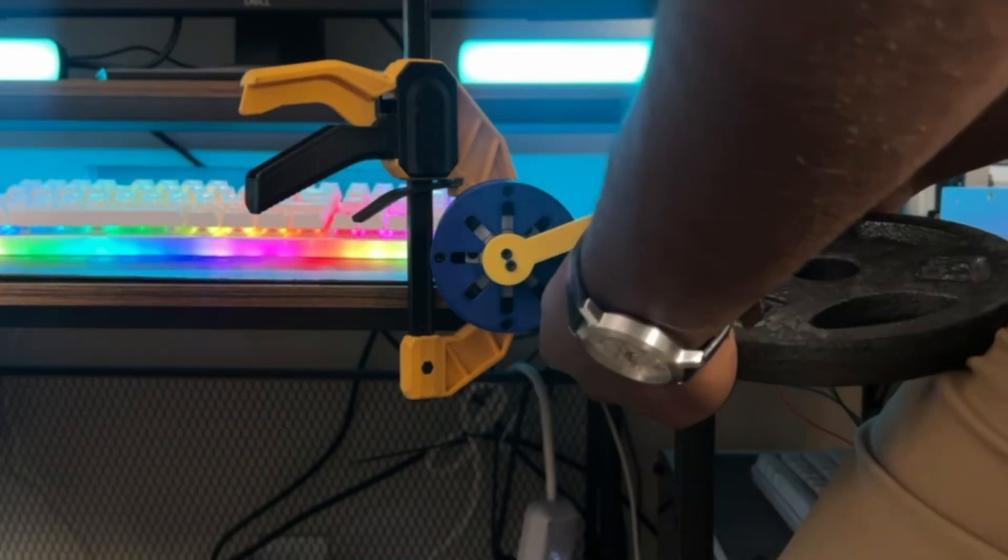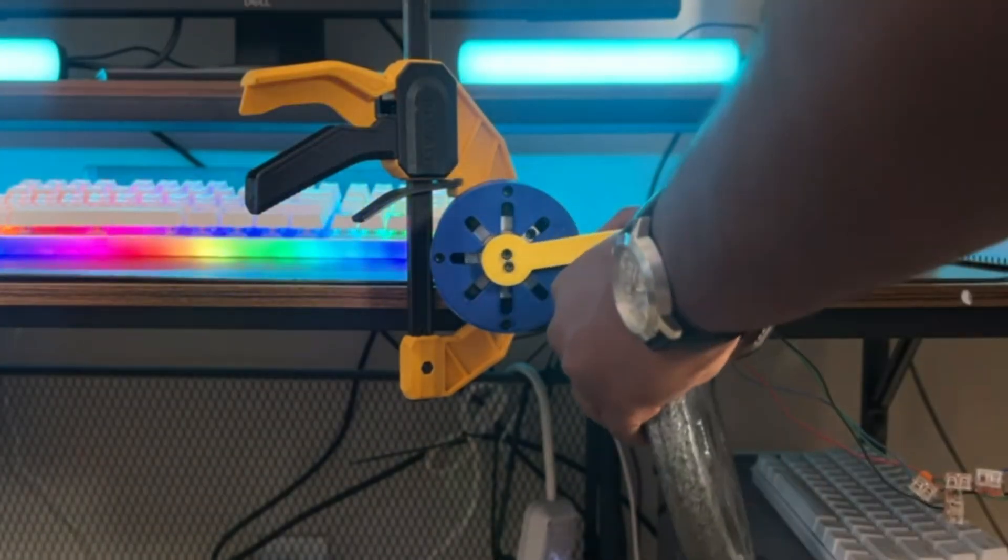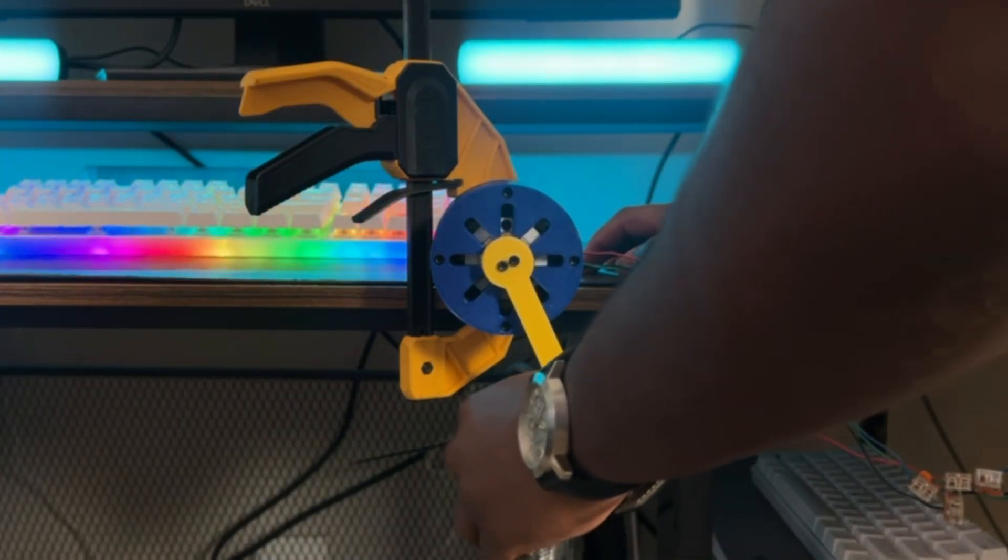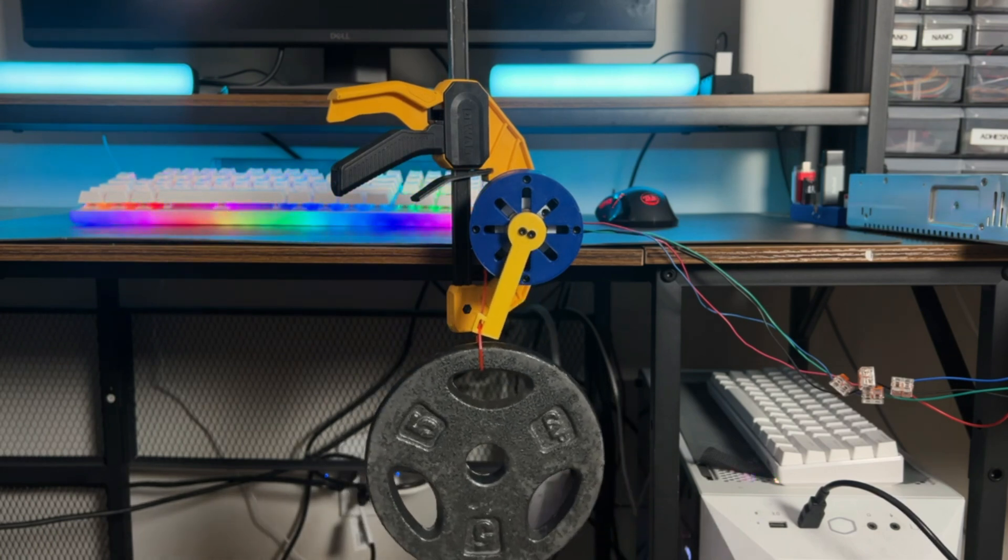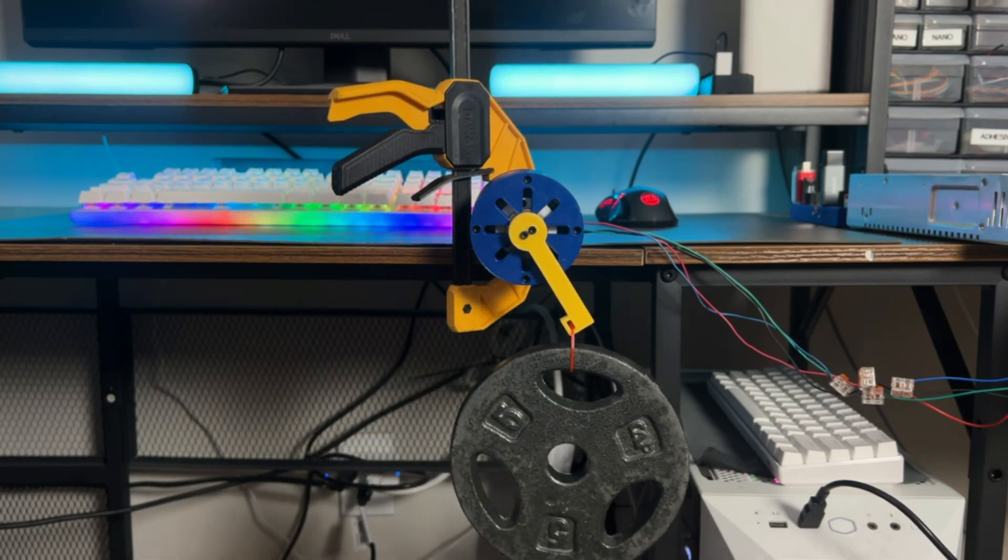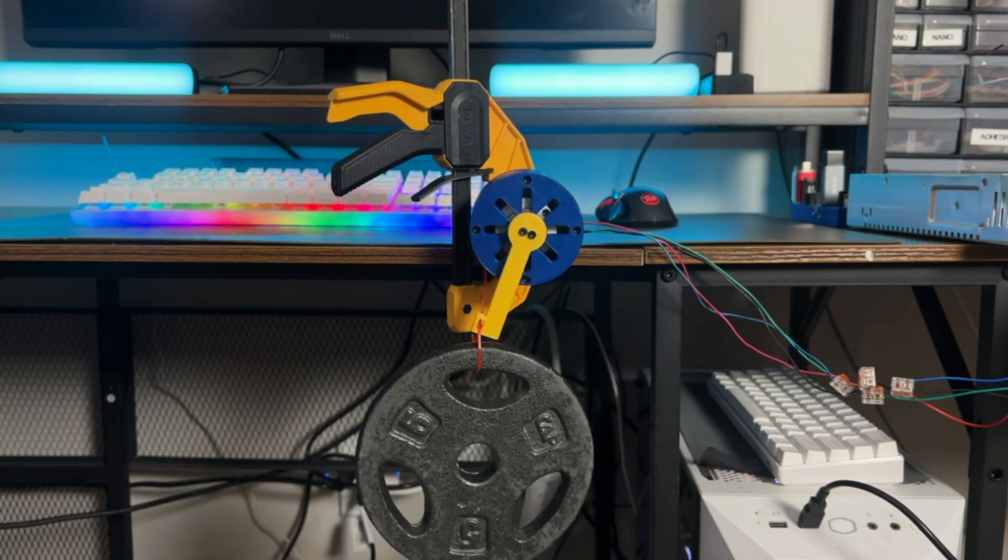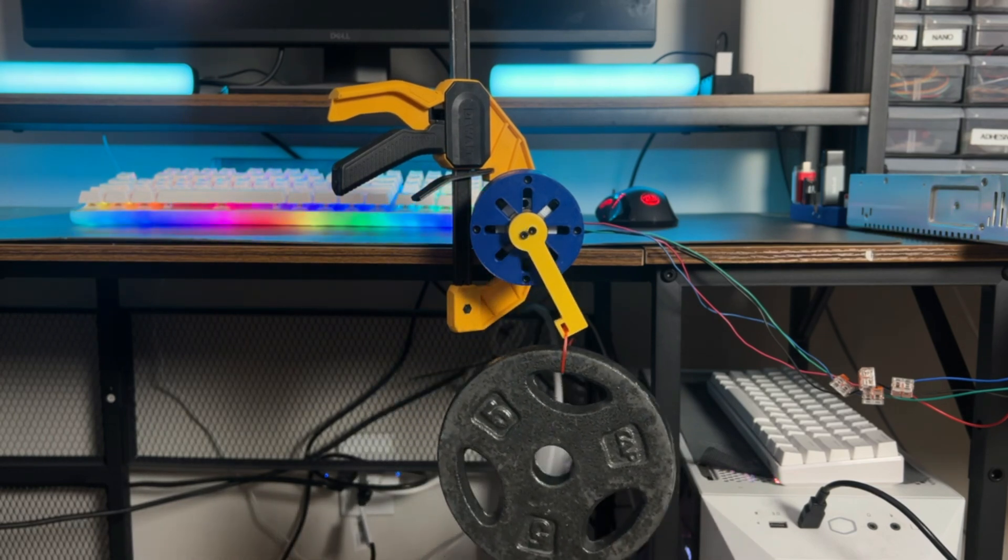So as you can see, as soon as we put the weight on there, the gearbox instantly gives up and drops with no resistance at all. So I knew for a fact it wasn't going to work out, but it's fine because our gearbox is stackable so let's try a 36 to 1 gear ratio.